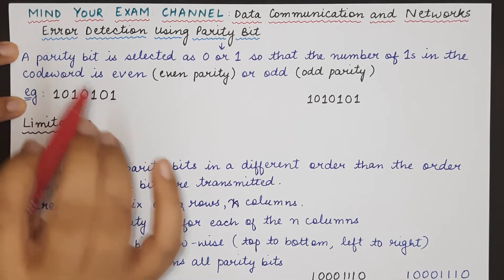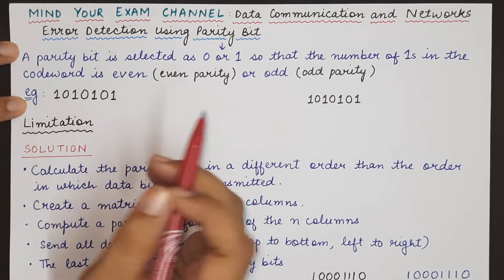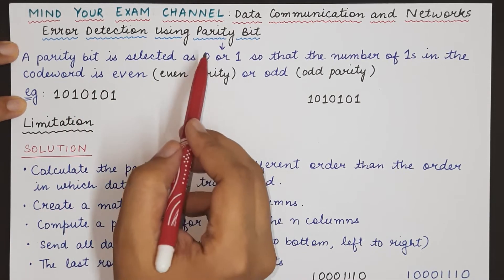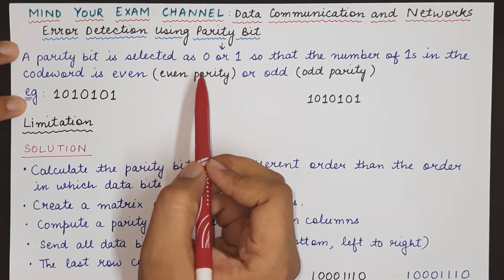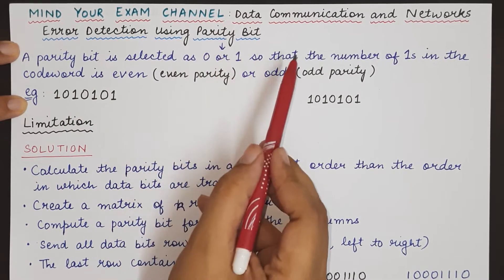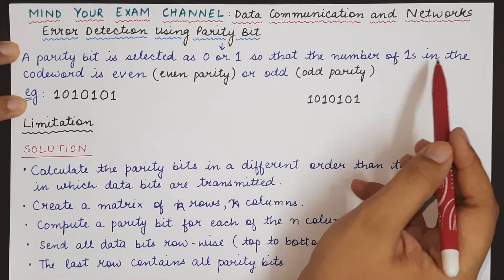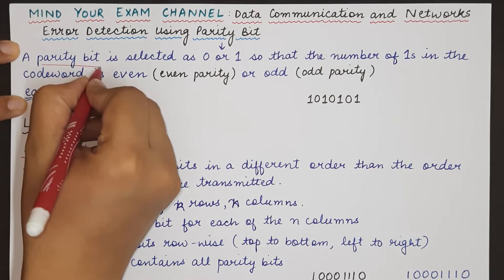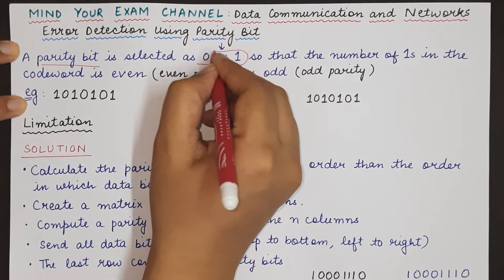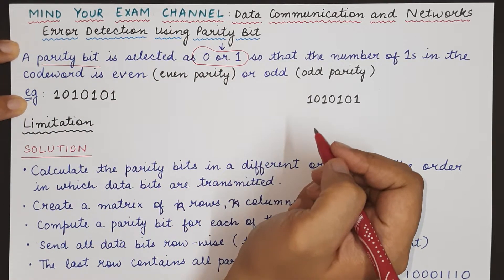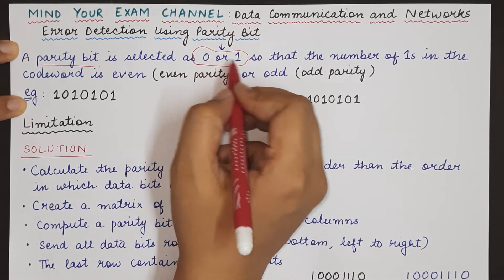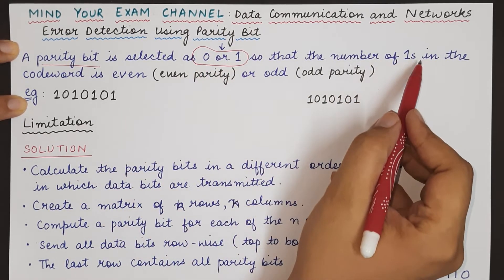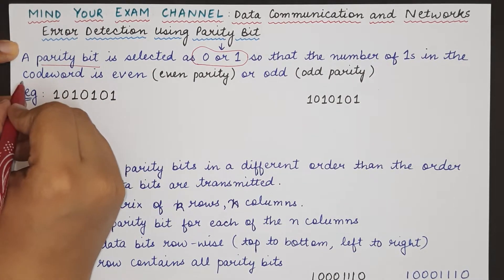A parity bit is like a normal bit which has a value of either 0 or 1. What value it will take is decided depending upon the total number of 1s in the codeword.